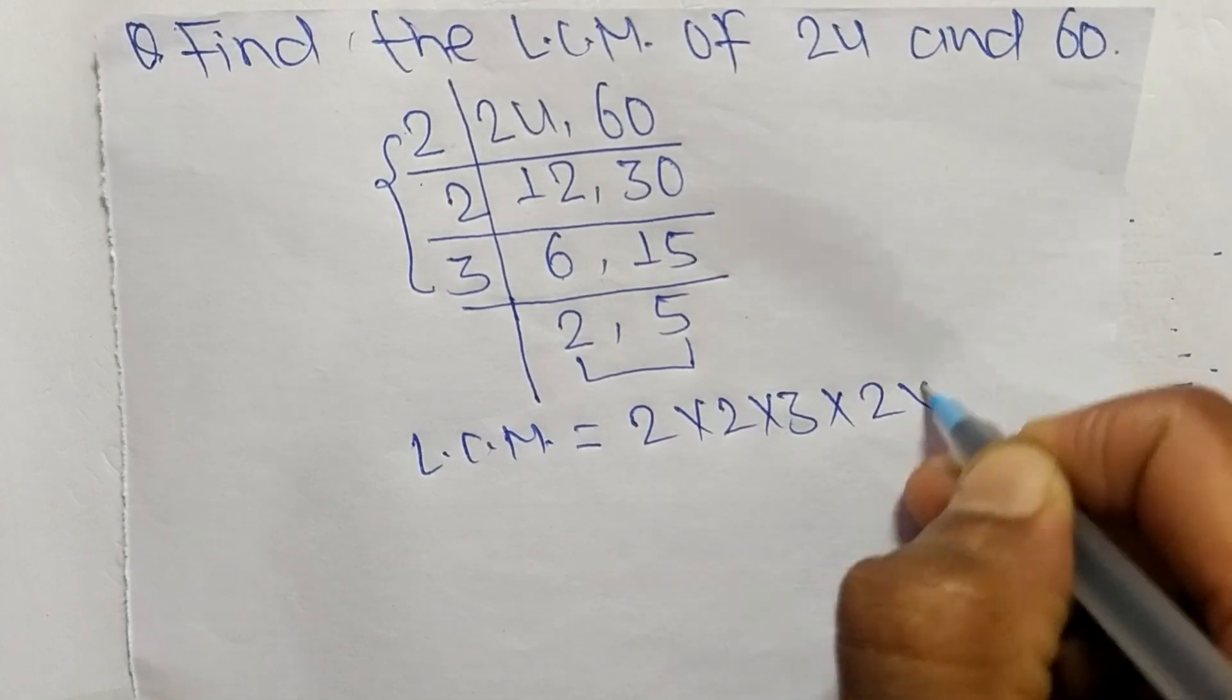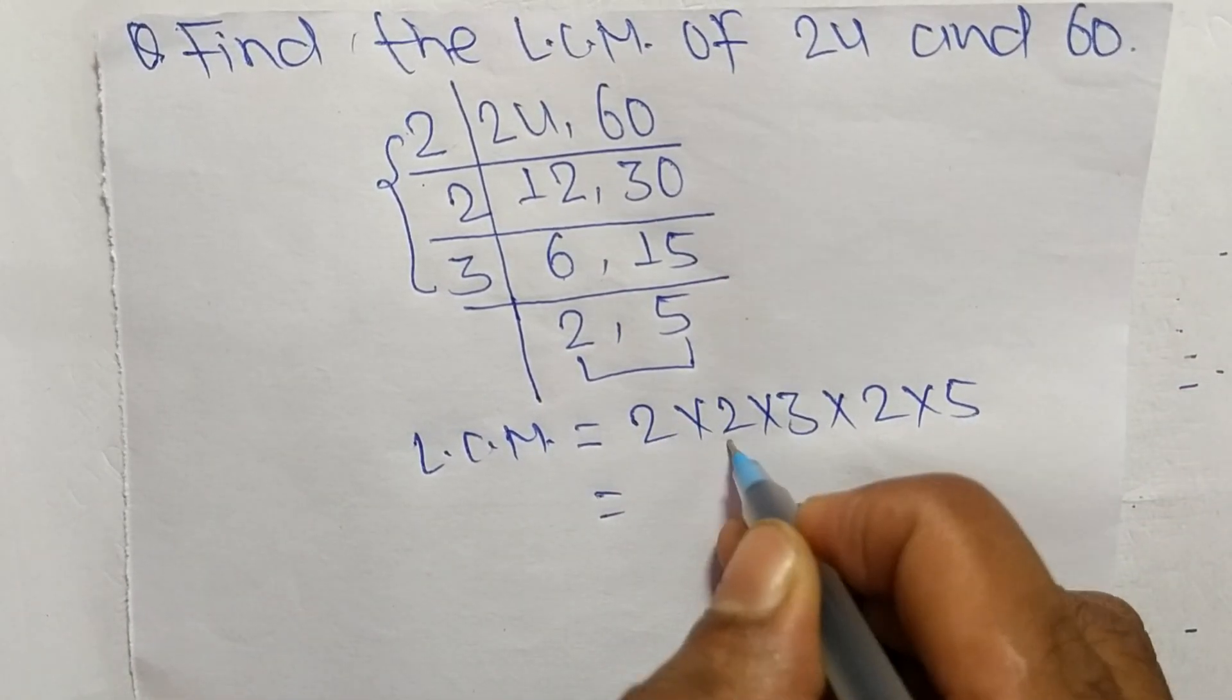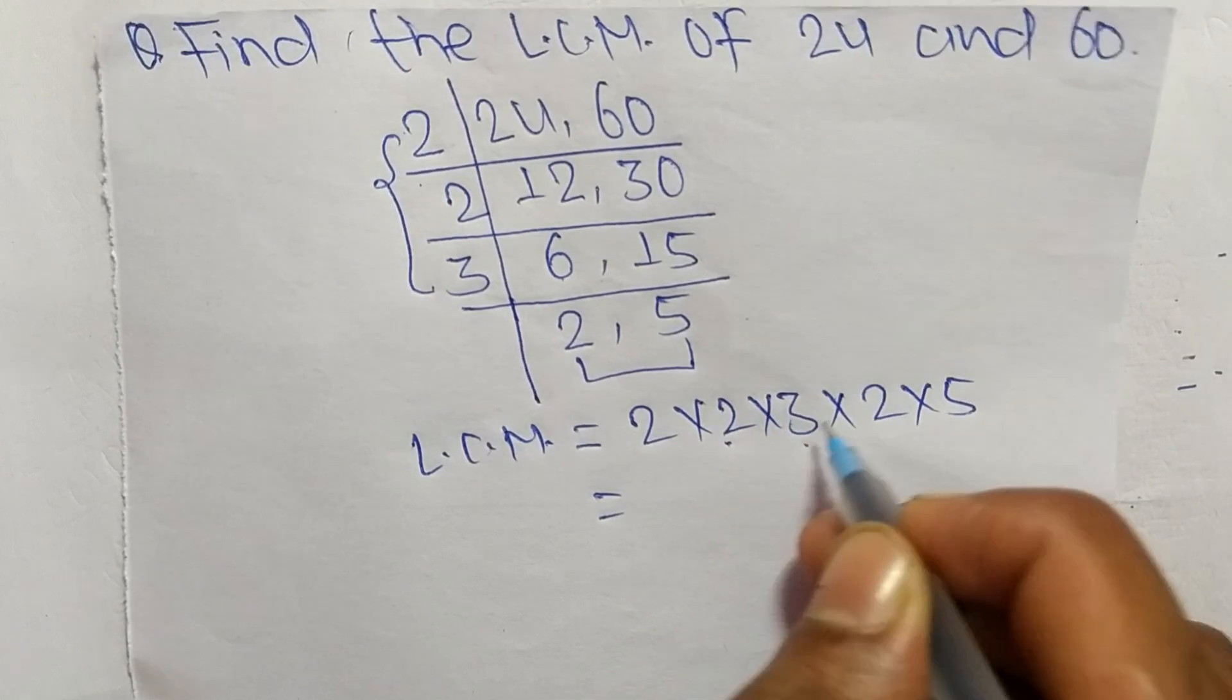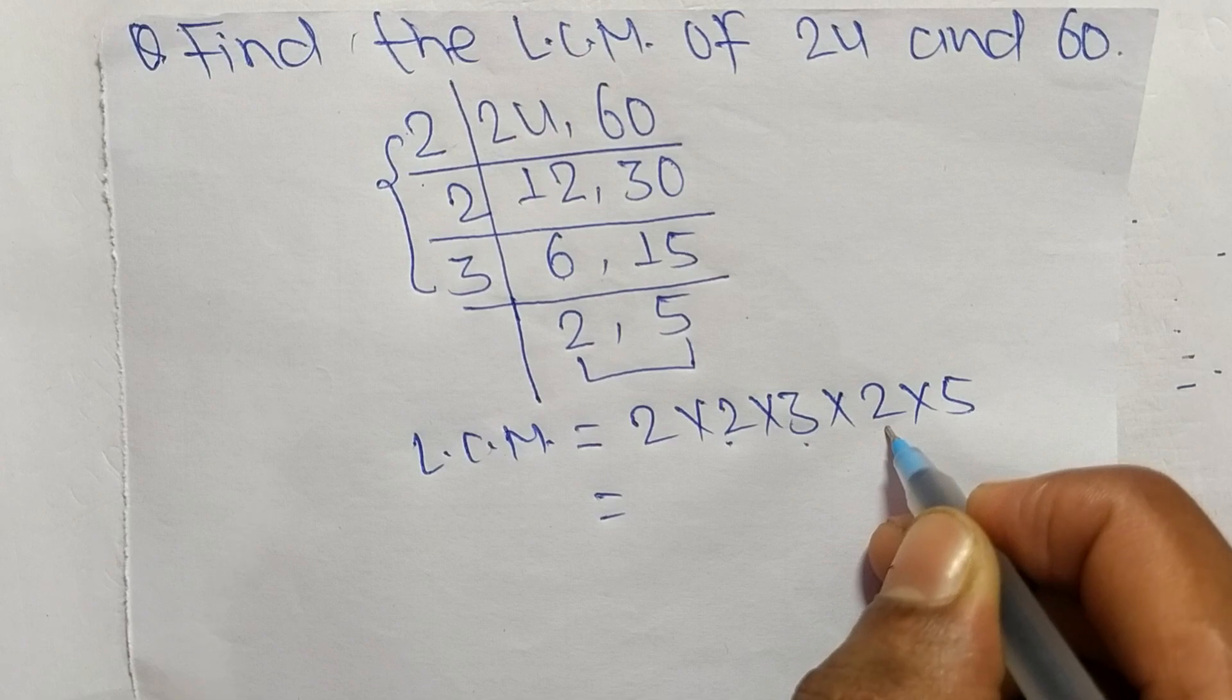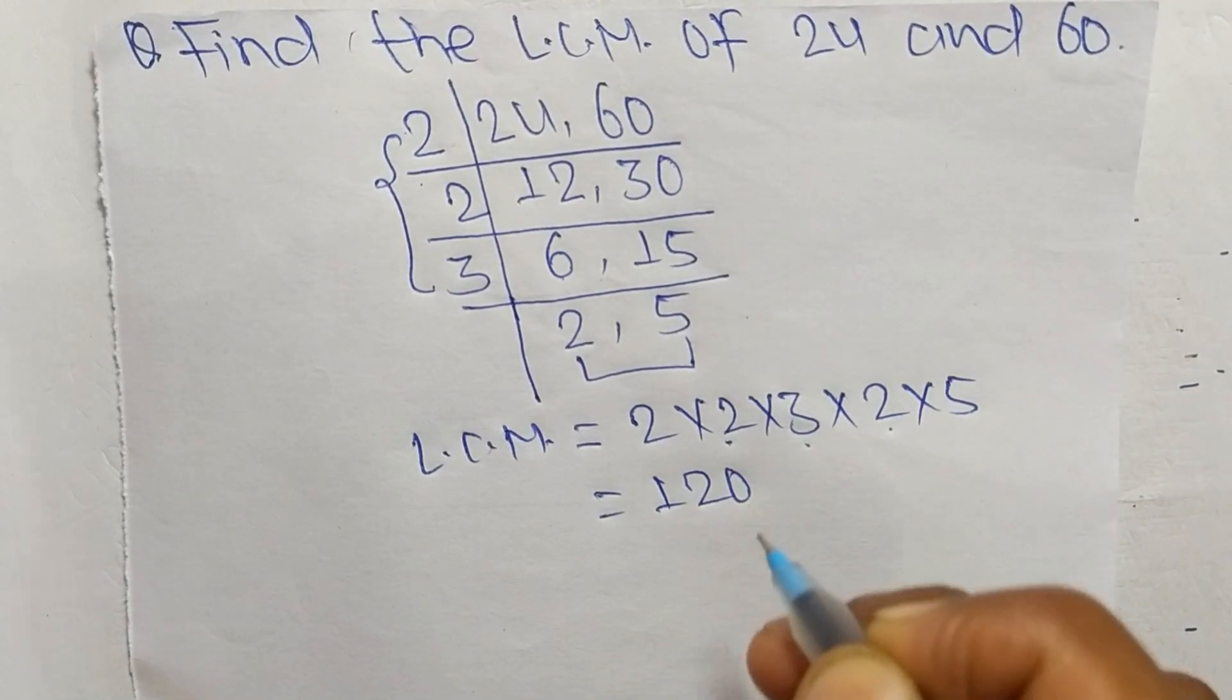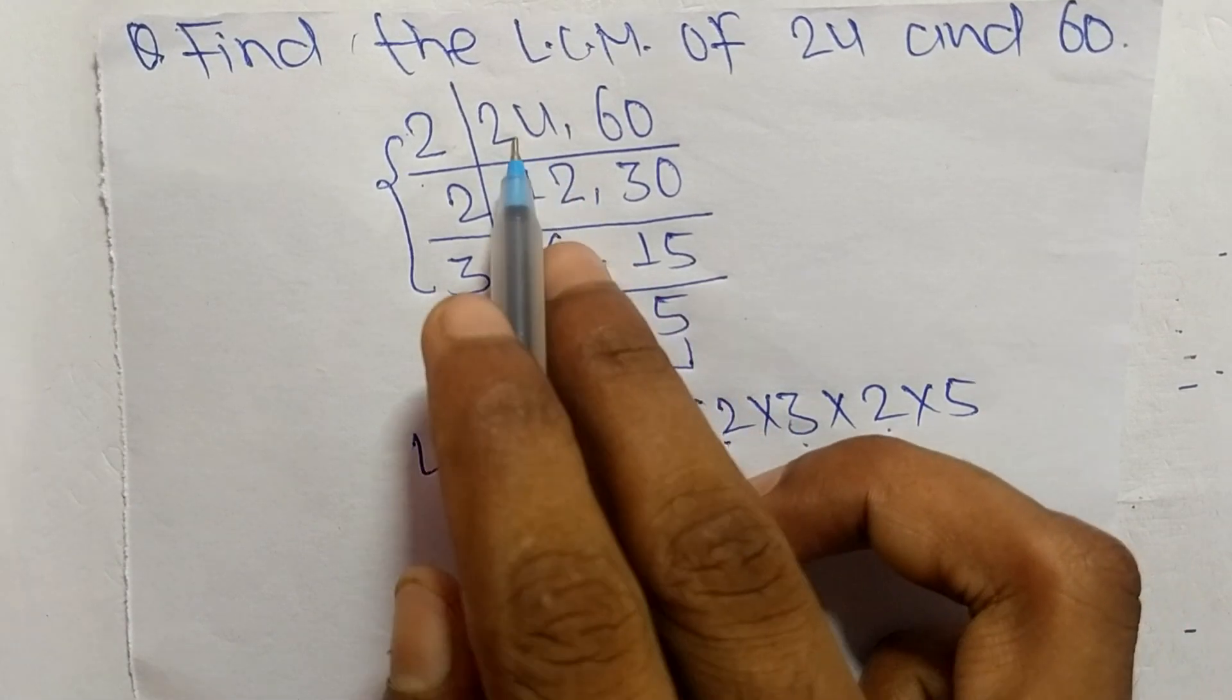So it is 2 times 2 means 4, 4 times 3 means 12, 12 times 2 means 24, 24 times 5 means it is 120. So 120 is the LCM of 24 and 60.